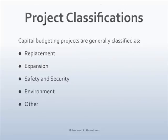Capital budgeting projects are generally classified as replacement, expansion, safety, security and environment, and other. Companies have to replace old equipment because of breakdowns, lower productivity, or technological obsolescence to maintain the production capability of the firm. Replacement projects are the most common capital budgeting project in business.